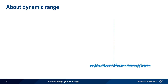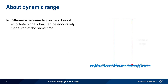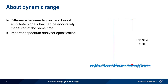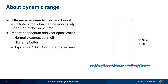The term dynamic range is used to describe the difference between the highest and lowest amplitude signals which can be accurately measured at the same time. The concept of dynamic range applies to many different devices, but in this presentation we'll be focusing on dynamic range in spectrum analyzers. Dynamic range is normally expressed in decibels, or dB, with higher values being more desirable. Most modern spectrum analyzers have a dynamic range of over 100 dB.